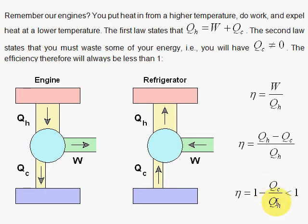And since the heat here is larger than the heat that you dump, this is going to subtract from one, and the efficiency eta will be less than one.